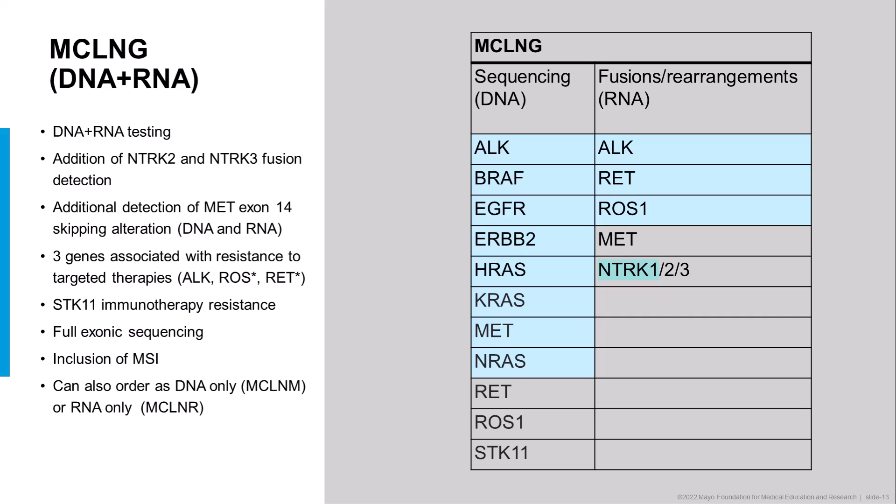Now I'm going to go through each of the subpanels. For the lung cancer panel, this is replacing a panel which had fewer genes on it — the previous panel genes are shown in light blue. This is the DNA panel and this is the RNA panel. We've added three additional genes on the DNA side: RET, ROS1, and STK11. On the RNA side, we've added MET exon skipping mutations and NTRK2 and 3 fusions.